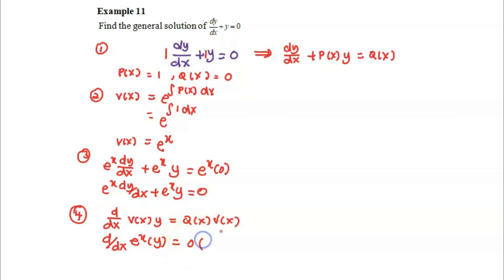Step 5, we will start to integrate both sides of equation number 4. The left hand side, we will have e x of y equals to right hand side. We need to integrate 0 with respect to x. So we will have exponent x y equals to c as the solution.